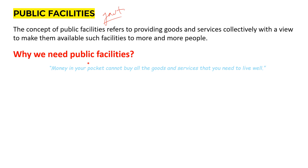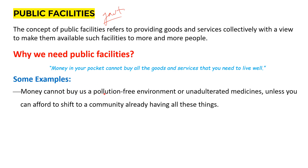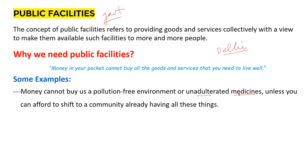But why do we need public facilities? From the book: 'Money in your pocket cannot buy all the goods and services that you need to live well.' We may have money but it does not mean we will always be able to buy all goods and services. For example, money cannot buy you a pollution-free environment or unadulterated medicines. People living in Delhi face the brunt of pollution — you may have billions of rupees but you cannot save yourself. If you want to live in a pollution-free environment, you would have to shift to a community that already has these things.